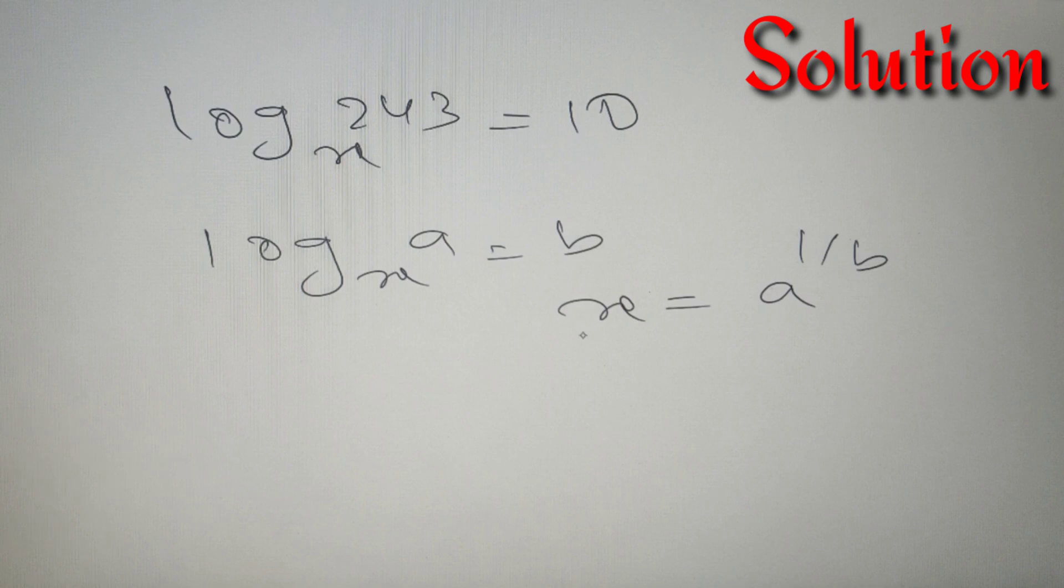By using this simple formula we can find the value of x. According to the given question, the value of a is equal to 243 and the value of b is equal to 10. So I can say that x is equal to 243 raised to power 1 by 10.